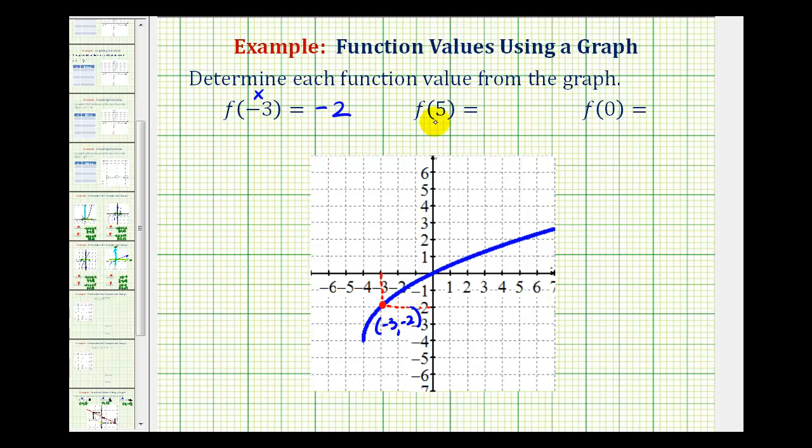Next, we have f of five. So we'll find five on the x axis and then move up to the function. So we're talking about this point here, and the function value will be the y value, which we can see is positive two.